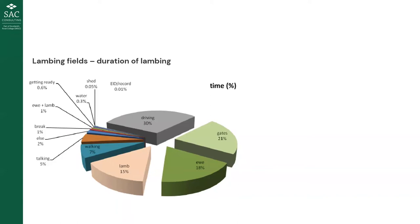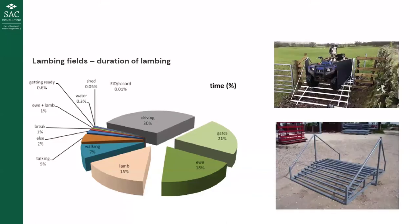Even more stark was the time spent driving, walking, and opening gates. They highlighted that 21% of time overall was spent simply opening gates — a significant drain on resources. From those findings, two farms implemented changes: one purchased ATV quad ramps so they didn't have to open gates and could simply slide over — a good example of how infrastructure can help. Another farm considered using temporary cattle gates between fields to reduce that requirement.